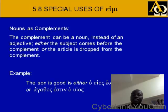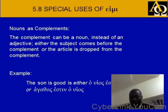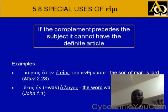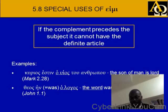Nouns as complements: the complement can be a noun instead of an adjective. Either the subject comes before the complement, or the article is dropped from the complement. For example: the son is good — ho huios estin agathos, or agathos estin ho huios — good is the son. If the complement precedes the subject, it cannot have the definite article. Kurios estin ho huios tou anthropou — the son of man is Lord. Theos en ho logos — the word was God, as in John 1:1.